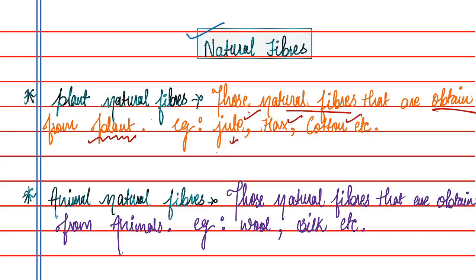Jute is obtained from a plant — from its stems. Flax seeds are another source; you have heard there are many benefits of flax seeds — you can eat them and you can also wear fabric made from them. Cotton comes from the fruit of the cotton plant.